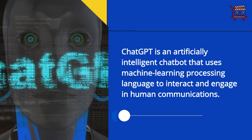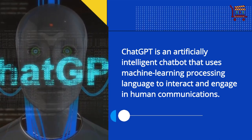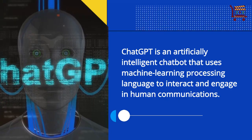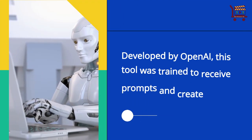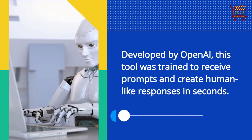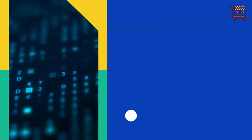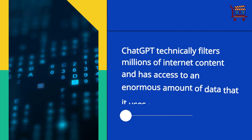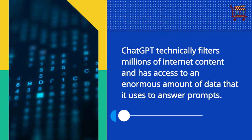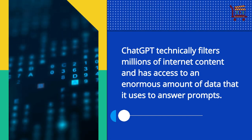ChatGPT is an artificially intelligent chatbot that uses machine learning processing language to interact and engage in human communications. Developed by OpenAI, this tool was trained to receive prompts and create human-like responses in seconds. ChatGPT technically filters millions of internet content and has access to an enormous amount of data that it uses to answer prompts.